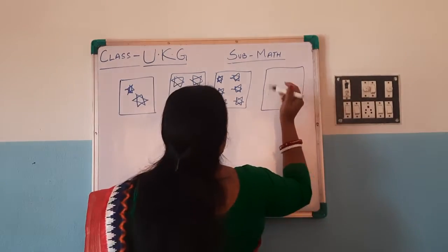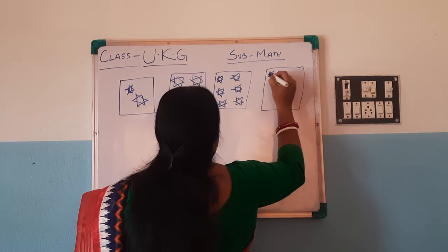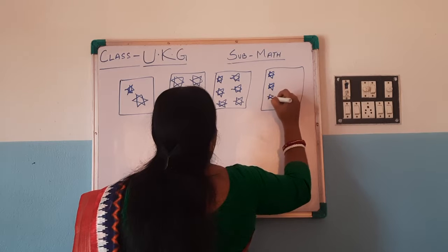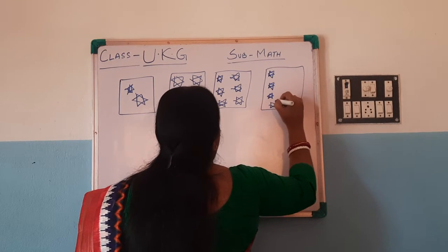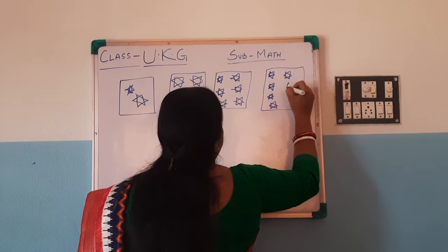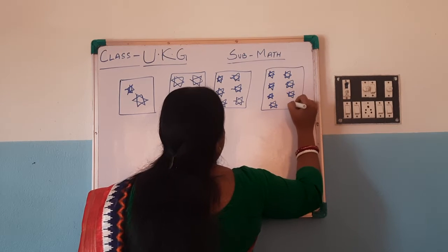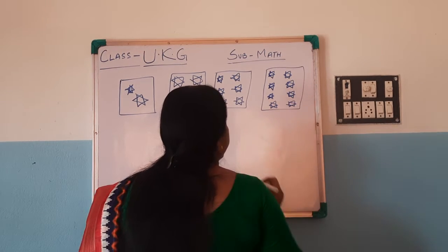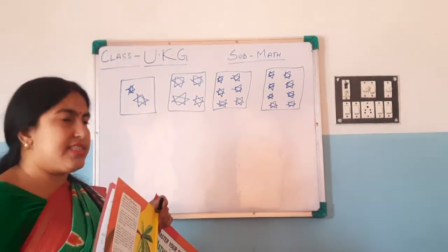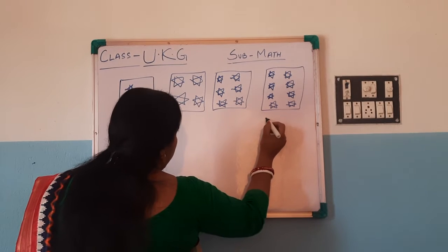And in the next box you have to draw eight stars. One, two, three, four, five, six, seven, eight. Eight stars. Okay, eight stars. It's very simple to draw a star.